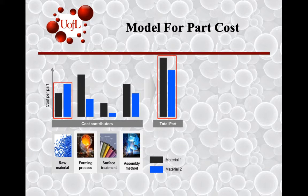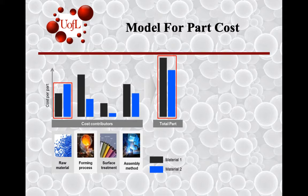Those are two examples in terms of where process selection factors into product design considerations. We have repeatedly used the metric of minimizing cost, and so in that consideration, let us look at what all goes into the cost for the part.